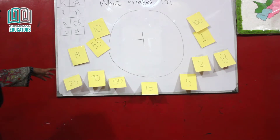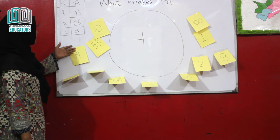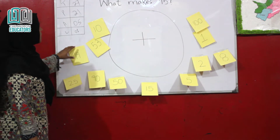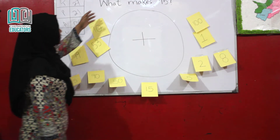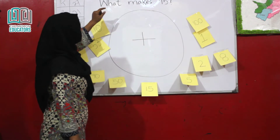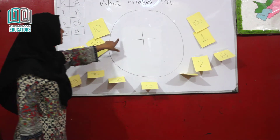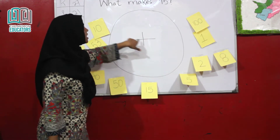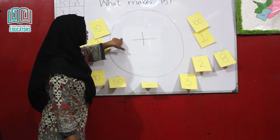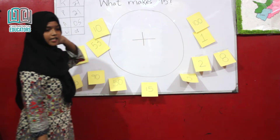We have a class 1 here. We have all numbers here. What's Make 95? We will have to list the number here. We will put the number here.